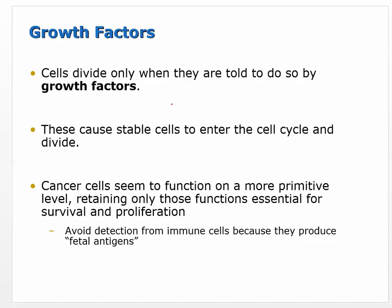Cells only divide when told to do so by a growth factor signal binding a receptor. Cancer cells seem to function on a more primitive level — like an embryo or fetus that's supposed to be dividing continuously. All the programming for rapid continuous cell growth is already in everybody's cells. Certain fetal and embryonic genes are turned on that allow that continuous cell division, and immune cells don't attack rapidly dividing fetal cells.